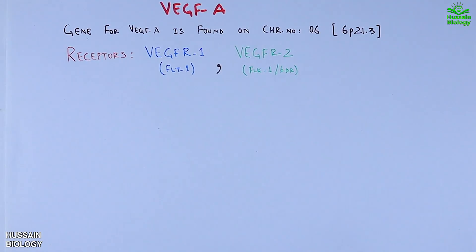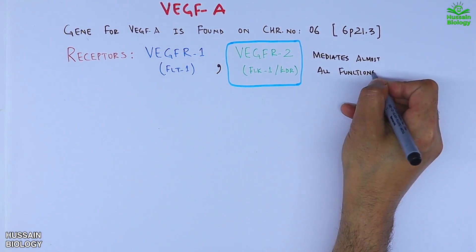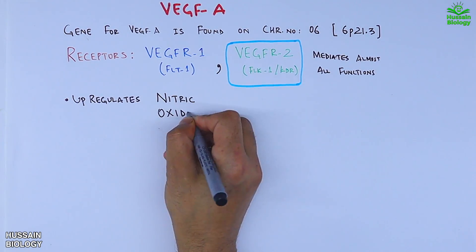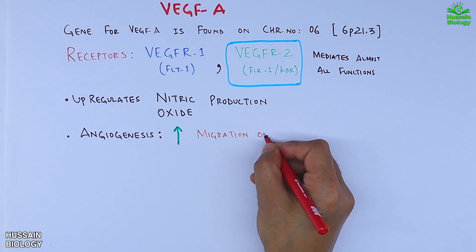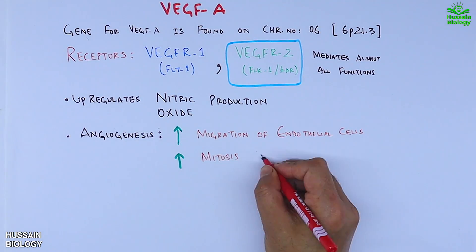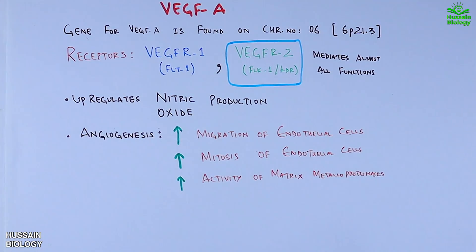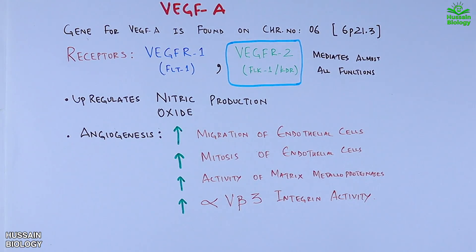The R2 receptor mediates all the functions. VEGF-A protein also upregulates nitric oxide production. It mediates angiogenesis where it increases migration of endothelial cells, increases mitosis of endothelial cells, increases activity of matrix metalloproteinases, and also increases alpha-V beta integrin activity.